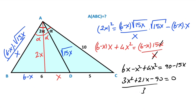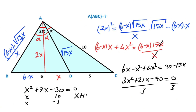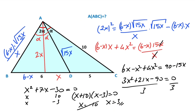Dividing both sides by 3: x² + 7x − 30 = 0. Since −30 = 10 × (−3), we factor: (x + 10)(x − 3) = 0. The first root is minus 10, which we discard as negative. So x = 3 units.